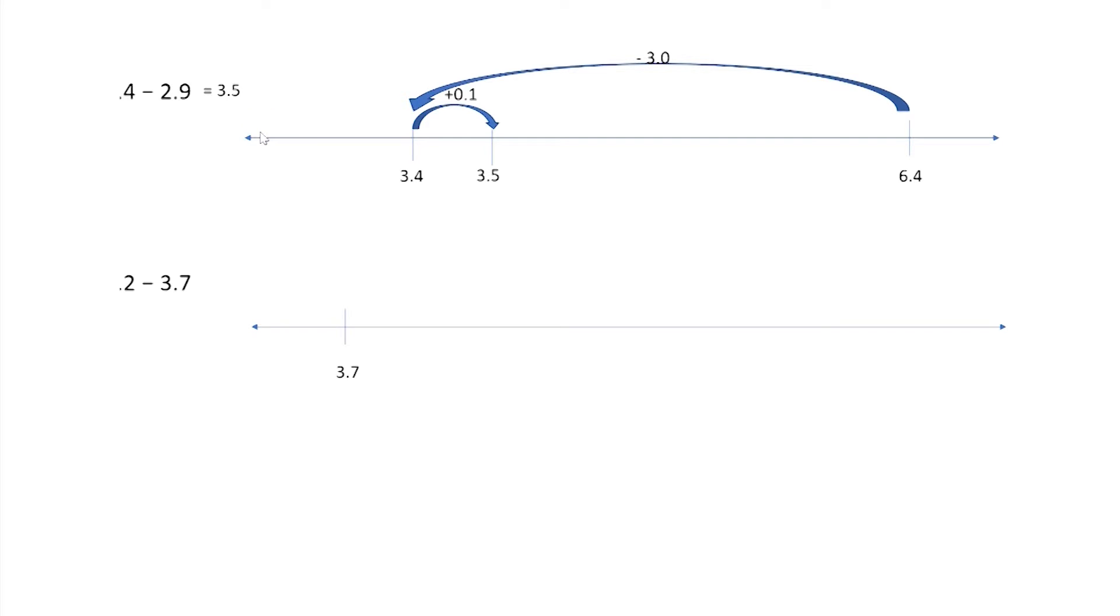For this one, I decided I wanted to count up from 3 and 7 tenths to 7 and 2 tenths to find the difference between them. So my first jump, what do you think it was? I like to get to an even number. So I added 3 tenths because that got me to 4.